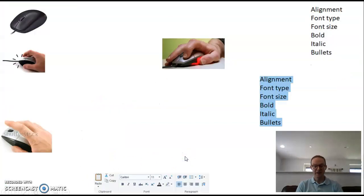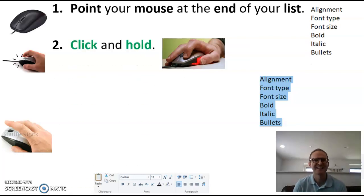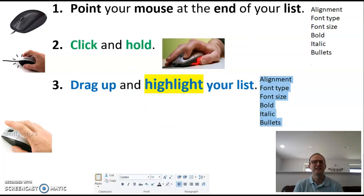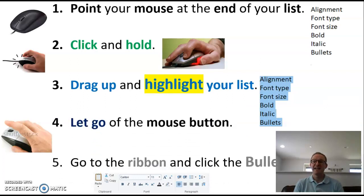Here are the steps. Point your mouse at the end of your list, click and hold, drag up and highlight your list, let go of the mouse button, and go to that ribbon and click the bullets button.